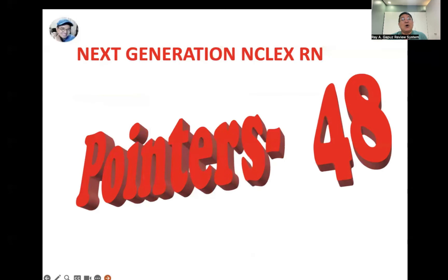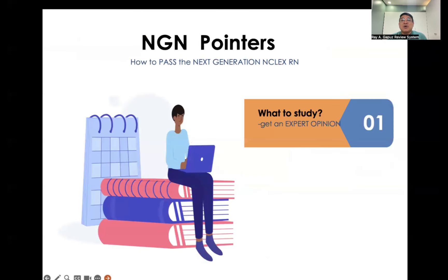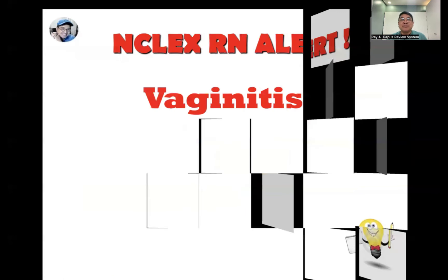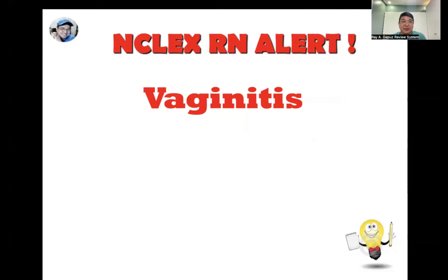Here are our pointers for Set Number 48. The first question you have to ask yourself when preparing for the Next Generation NCLEX is: what are the things I need to study? You need expert guidance to have a clear overview of what to focus on — and that's the keyword: focus. In this set of pointers, allow me to highlight one important concept: vaginitis. Vaginitis is a general label for conditions that can lead to inflammation of the vagina.